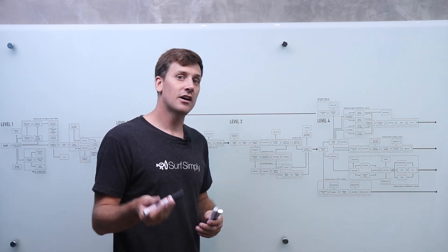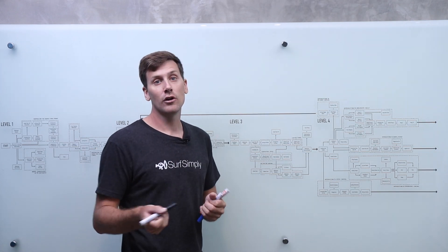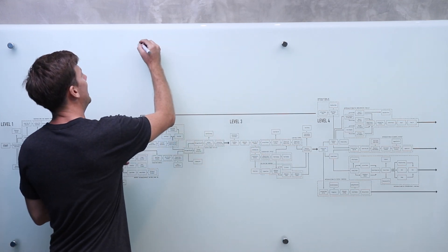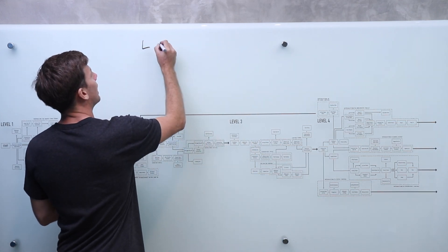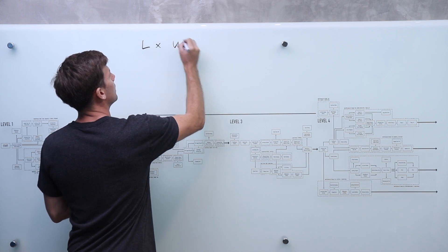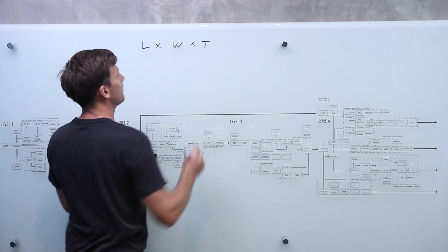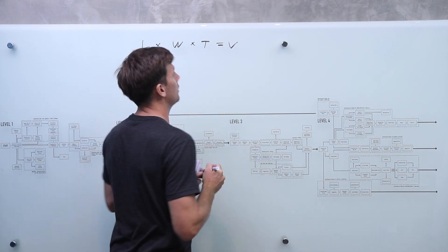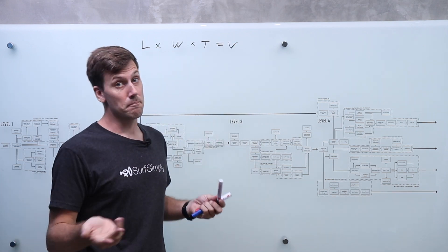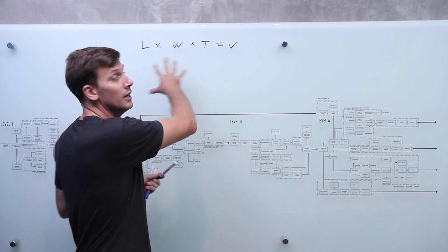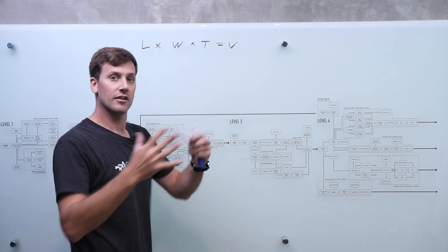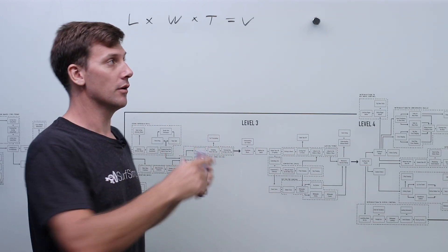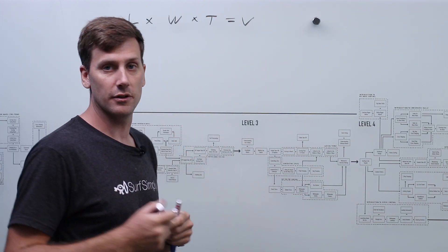Now the volume of a surfboard is exactly like the volumes that you used to calculate at school in math class. So you have a length by a width by a thickness. Now we multiply those up and we end up with our volume. Now a surfboard is a pretty complicated shape to do this to, it's not a nice cube. In fact with modern boards designed on a computer it's pretty easy for the computer to figure it out.